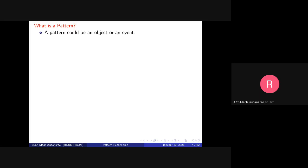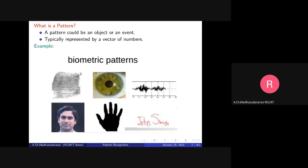What is a pattern? A pattern could be an object or an event, typically represented by a vector of numbers. For example, consider these input signals. Can someone tell whether this is a 1D or 2D signal? You studied signals and systems and DSP — can you tell me what this signal is: 1D, 2D, or 3D?